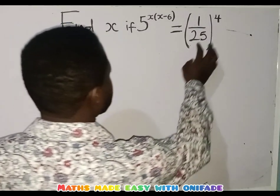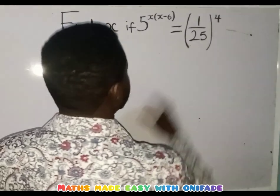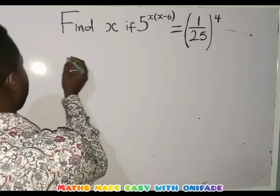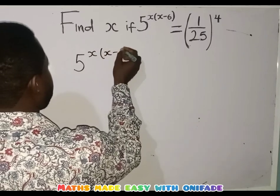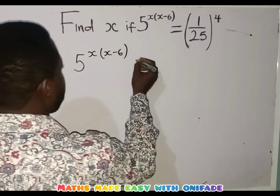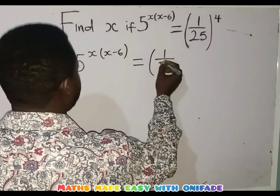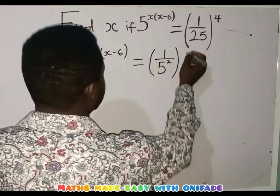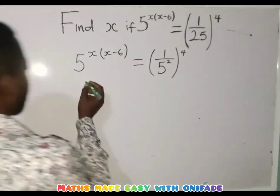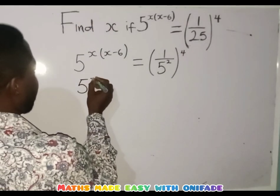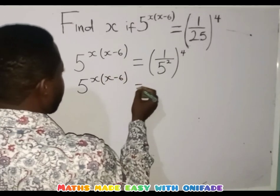The first thing I am going to do is change the 1 over 25 in the brackets to an index form. So in that case I am going to have 5 raised to the power x into brackets x minus 6. Now on this side I am going to have in the brackets 1 over 5 raised to the power 2, raised to the power 4. The 25 has changed to 5 raised to the power 2. Then I am going to have 5 raised to the power x into brackets x minus 6 equals to.